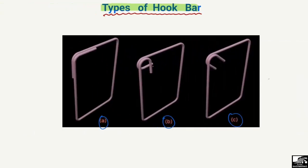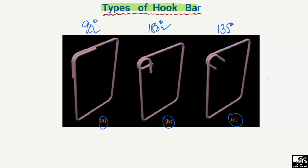Coming back to our basic picture showing the three types of hooks: the first is the 90 degree hook, the second is the 180 degree hook, and the third is the 135 degree hook. We use different hooks because sometimes we need less bond strength between concrete and steel — we provide the 90 degree hook. When we need high bond strength, we use the 180 degree hook. The 135 degree hook is also known as the seismic hook, used in earthquake regions.